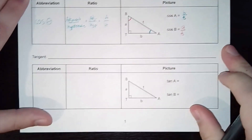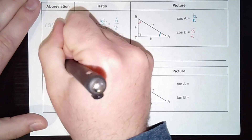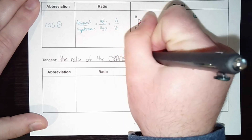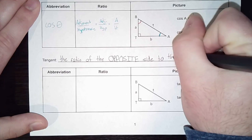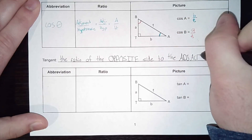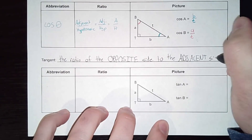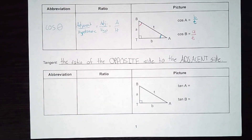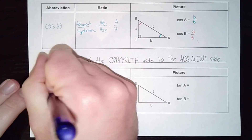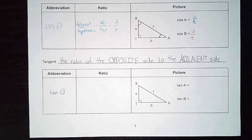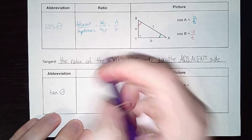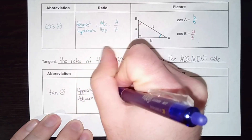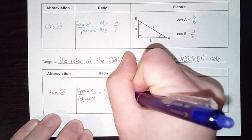The final ratio is tangent. Tangent is the ratio of the opposite side to the adjacent side — there is no hypotenuse involved in this one, which sometimes makes it a little trickier. The abbreviation is TAN of theta. We call it tangent — not 'tan.' The ratio is opposite over adjacent, abbreviated as opp over adj, or simply O over A.